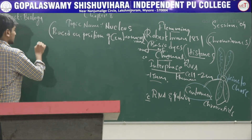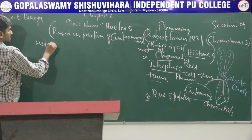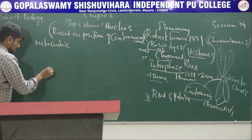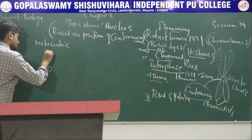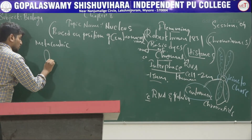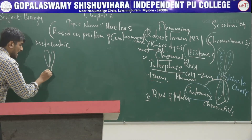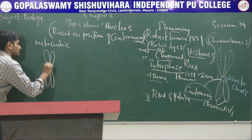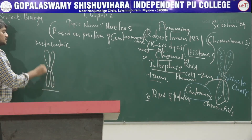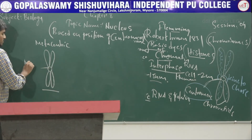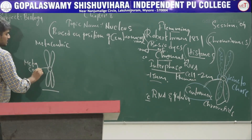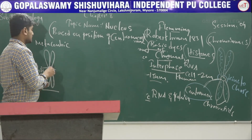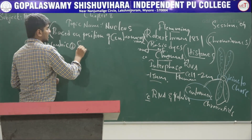The first type is metacentric. In the metacentric chromosome, the centromere is located at the centre, and the chromatids show two equal-length arms. So this is called metacentric — 'meta' means centre. The next one is submetacentric chromosome, where the centromere is present slightly away from the centre, so we can observe one shorter arm and one longer arm.